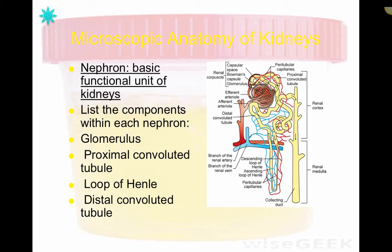Moving on to the microscopic anatomy of the kidney — the main component is the nephron, which is the basic functional unit of the kidney. It is the component doing all the work within that larger kidney structure. The nephron components include: the glomerulus, the proximal convoluted tubule (also called the proximal tubule or PCT), the loop of Henle, and the distal convoluted tubule (also called the distal tubule or DCT).